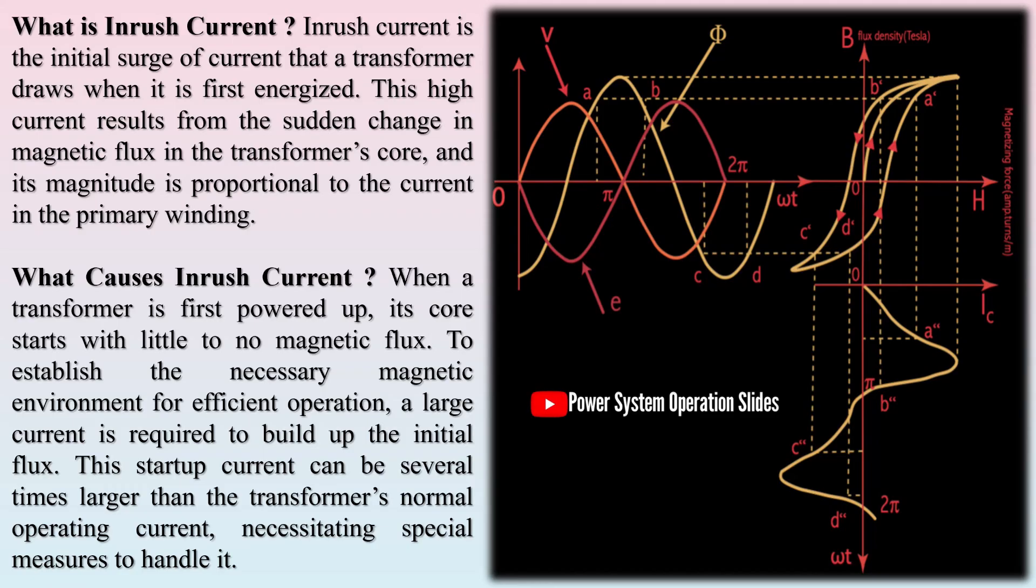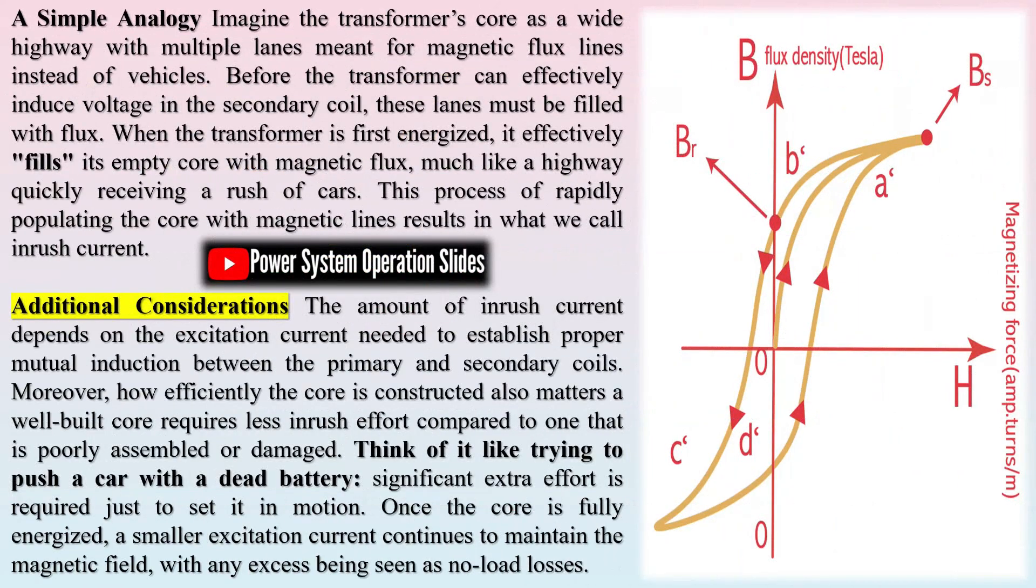When a transformer is first powered up, its core starts with little to no magnetic flux. To establish the necessary magnetic environment for efficient operation, a large current is required to build up the initial flux. This startup current can be several times larger than the transformer's normal operating current, necessitating special measures to handle it.